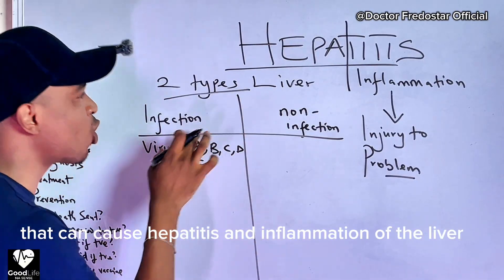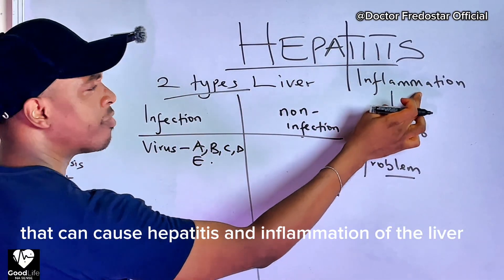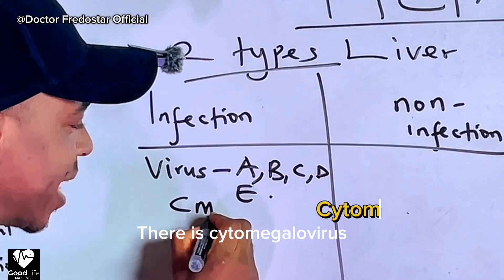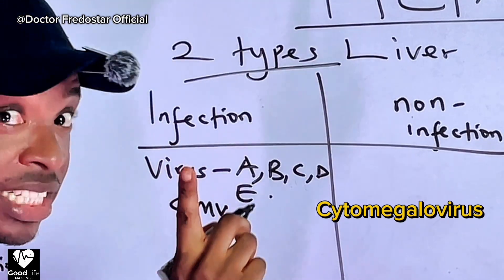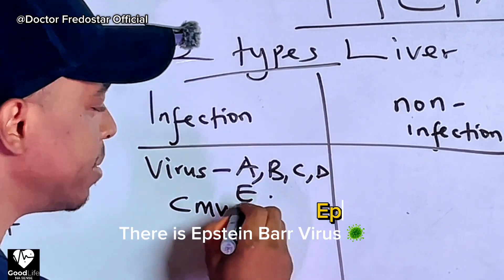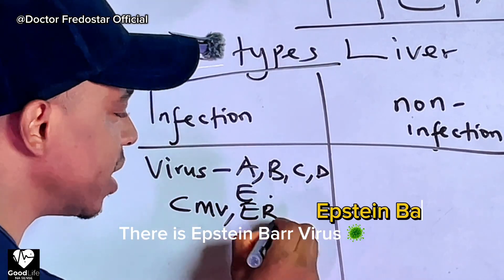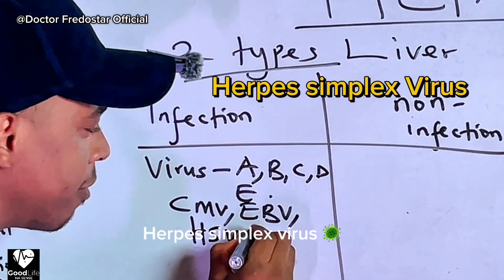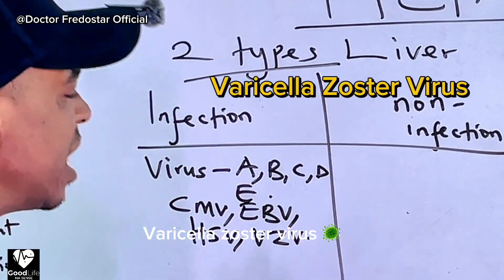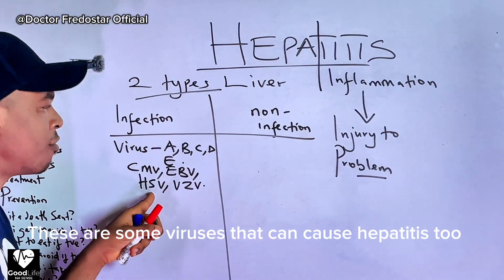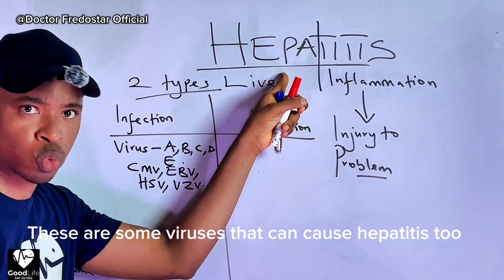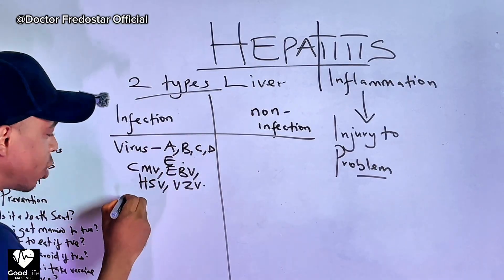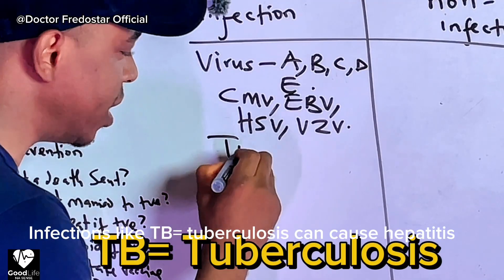We also get Epstein-Barr virus, herpes simplex virus, varicella zoster virus — these are some other viruses that can cause hepatitis too. We also get other infections that can cause hepatitis, like TB, malaria, syphilis, and many other infections.